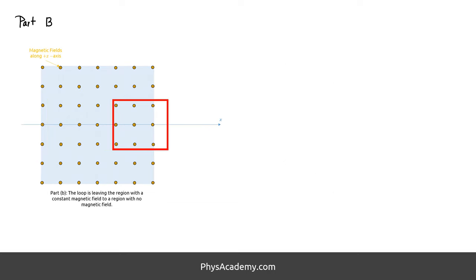Alright, for part B, this illustration shows the state of the loop as it leaves the magnetic field. As you see, as the loop moves toward the right, the enclosed magnetic field in the loop, or magnetic flux, decreases.